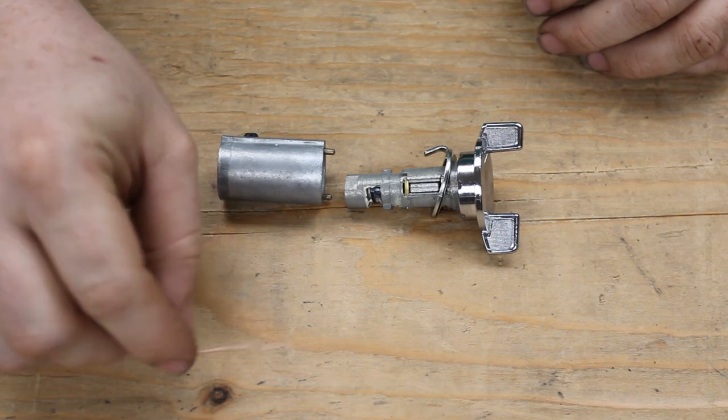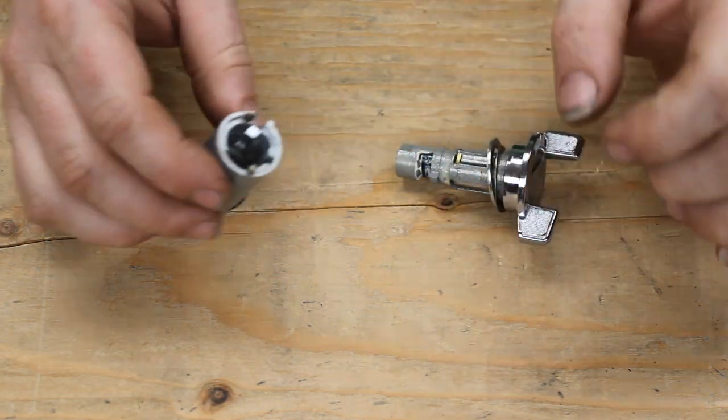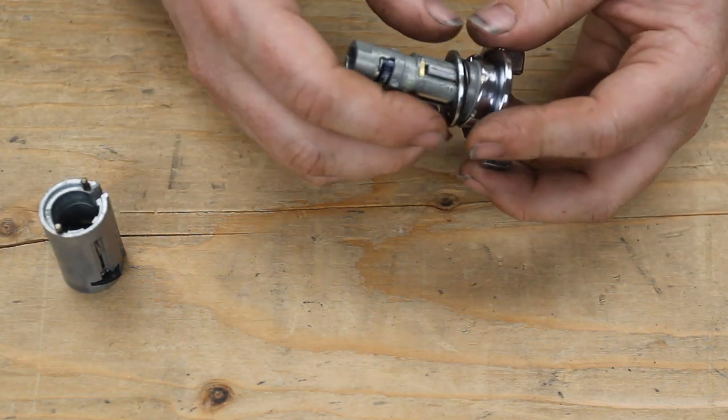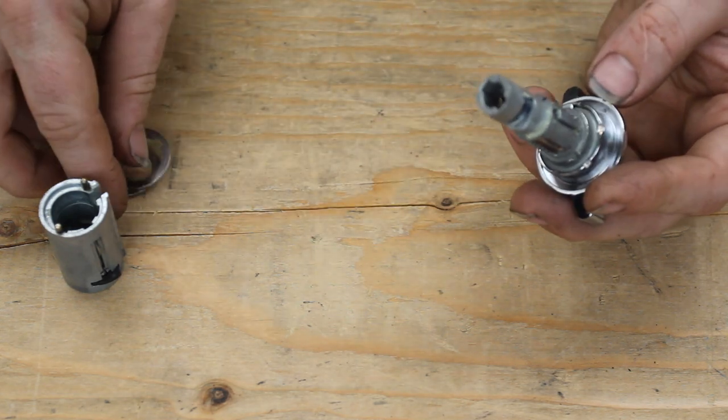All right, so with this dismantled, be careful of these two brass pins. They are spring loaded. You have the anti-theft ring, and you have a wave washer.